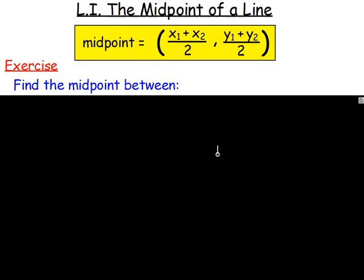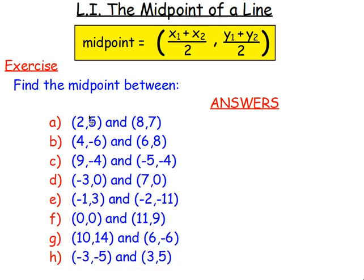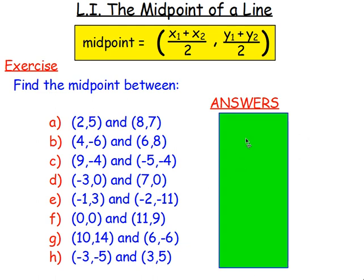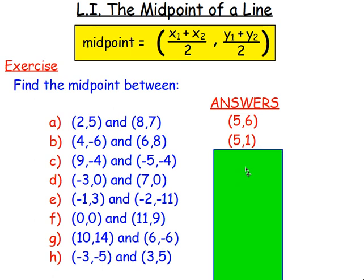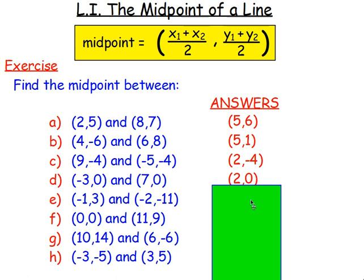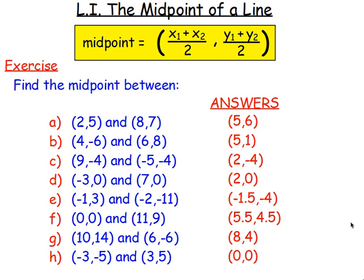Instead of a page from the book, here are questions on this slide for you to work through. Pause this now and try working your way through them. The answers: A is (5, 6), B is (5, 1), C is (2, negative 4), D is (2, 0), E is (negative 1.5, negative 4), F is (5.5, 4.5), G is (8, 4), and H is (0, 0).